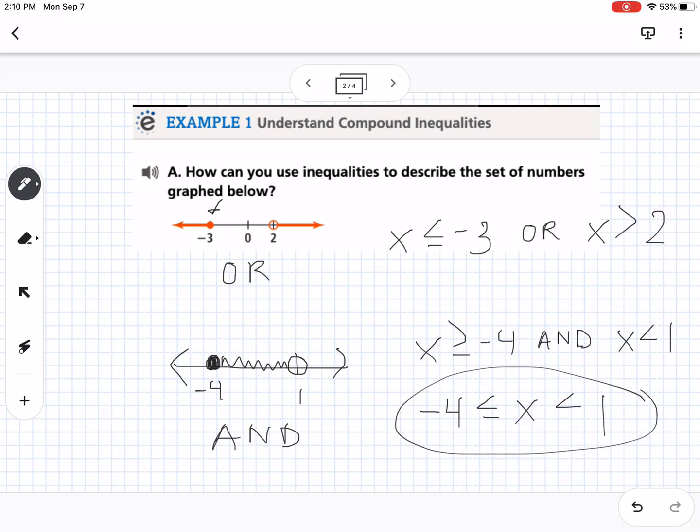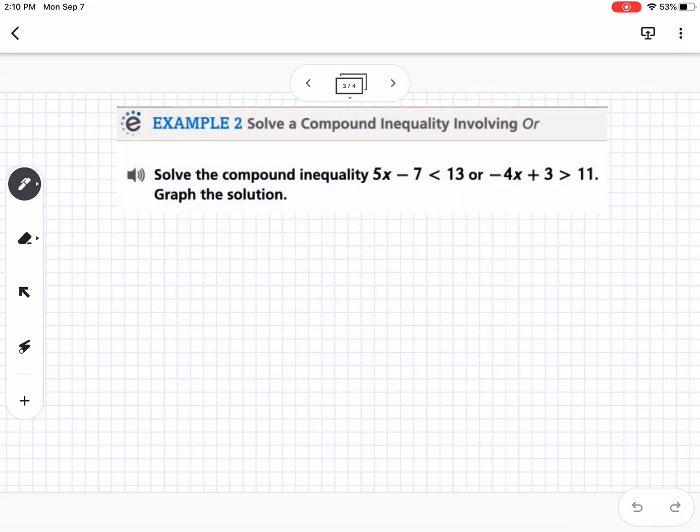But understanding that when it's one single compound inequality like that, it means it's an and, and it's going to be shaded in between. If you have two separate ones, like the first example, it's going to be or.